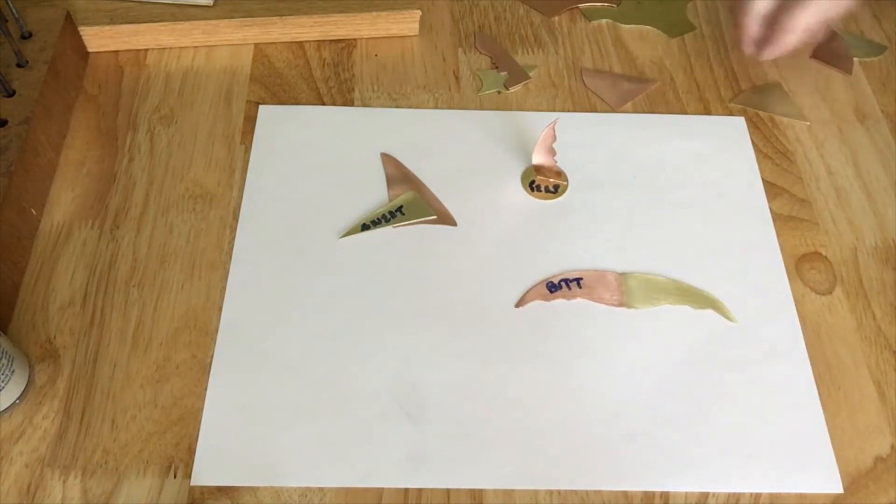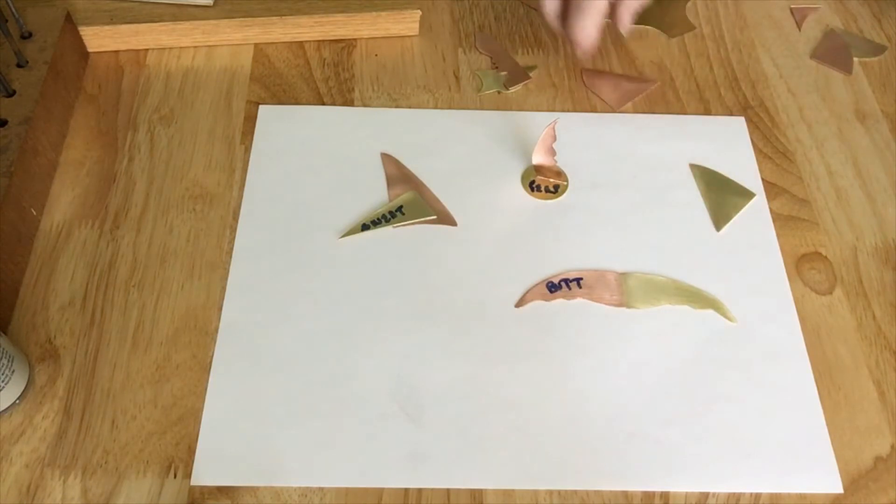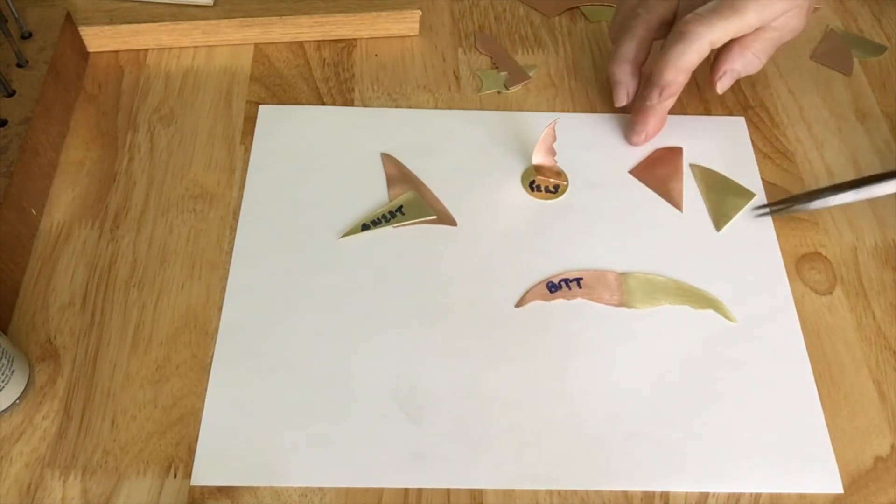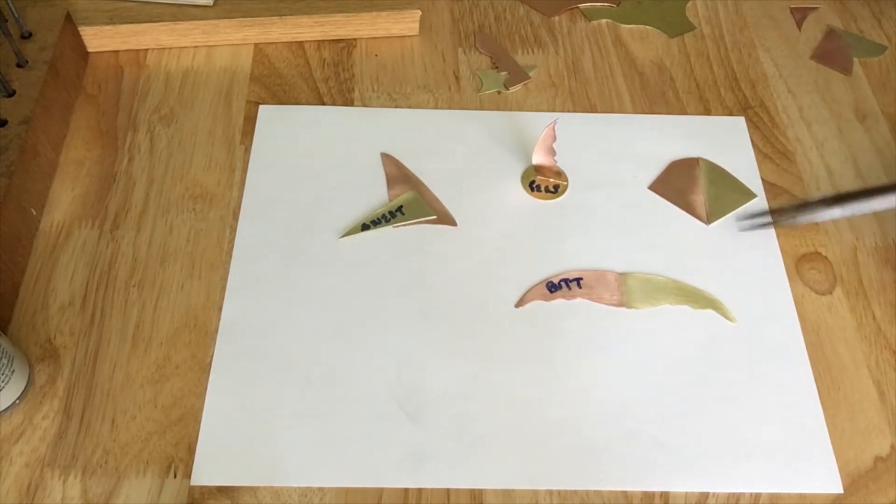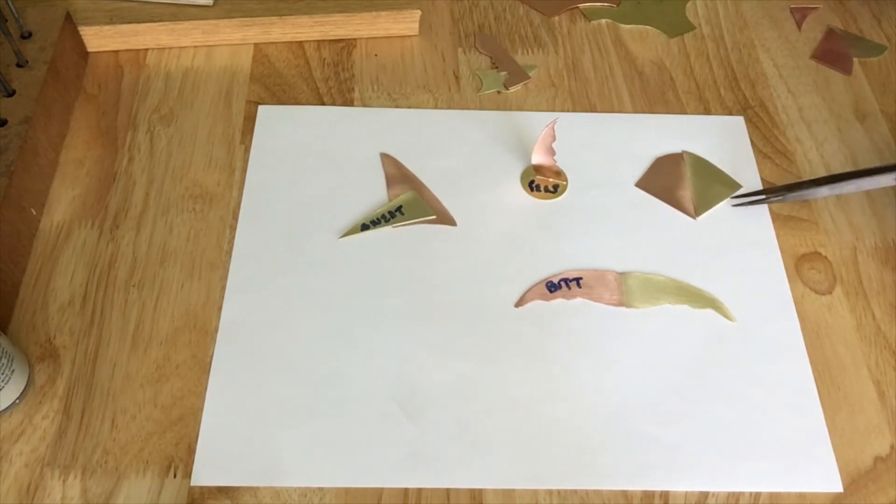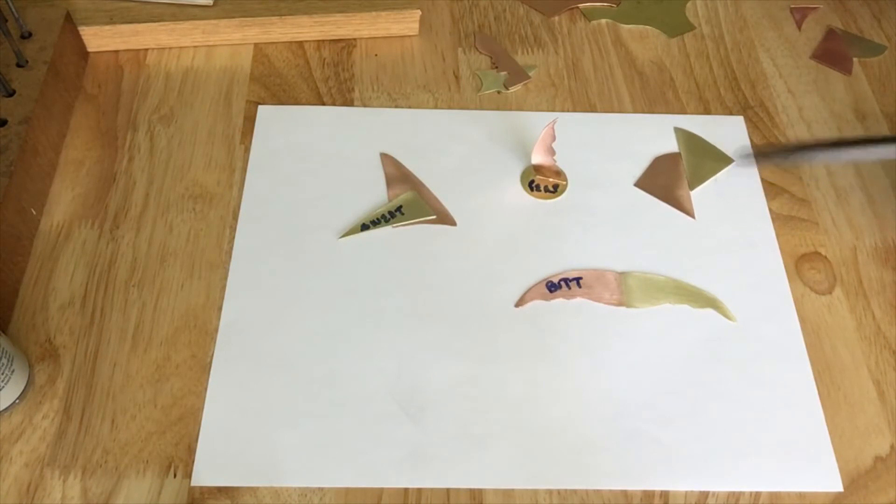Now for a butt joint, you can have your pieces aligned like so, or they can be asymmetrical like so. Either is acceptable.